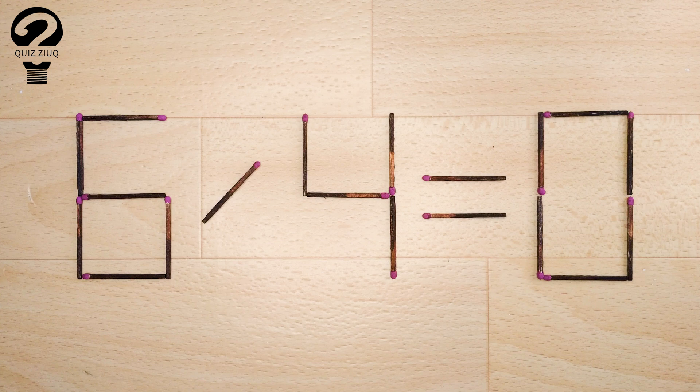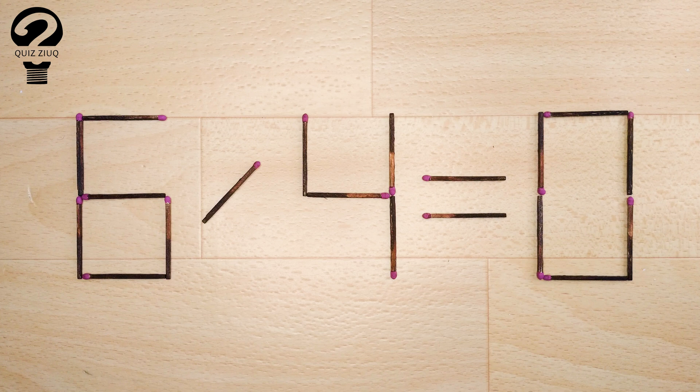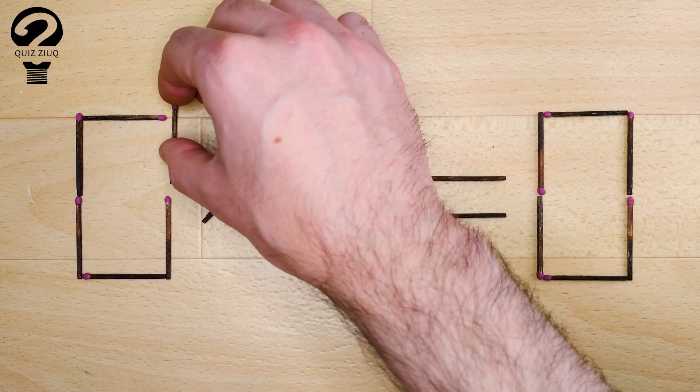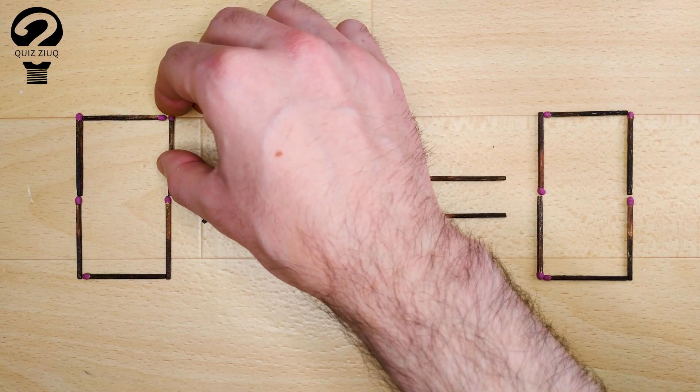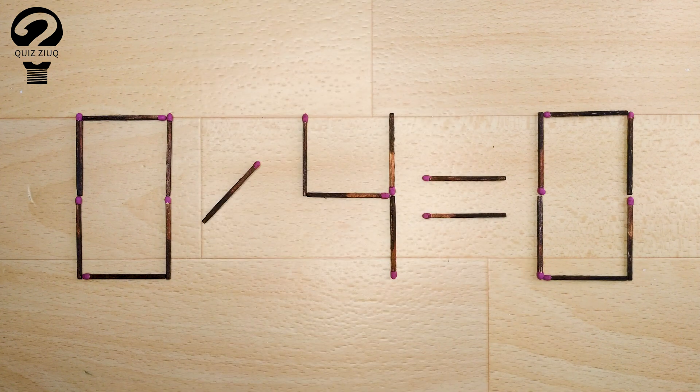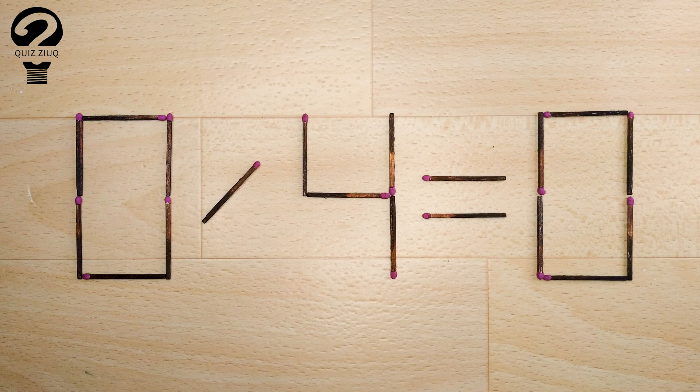How is this little puzzle solved? We just need to move one matchstick. And now, when we check: 0 divided by 4 equals 0. 0 equals 0. Our equation is correct. The task is completed. The puzzle is solved.